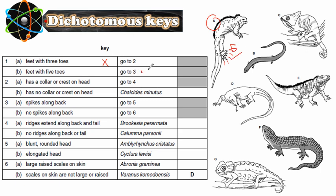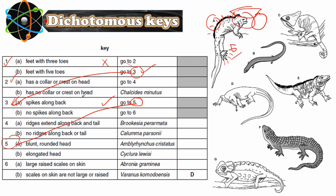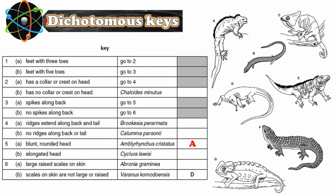So we go to question three. Question three: spikes along back. Look here — it has spikes along its back. So let's go to question five. Blonde rounded head: does it have a rounded head or an elongated head? It has a blonde, rounded head. So the name of this animal is Amblyrhinchus cristatus. We write the letter A for animal number A.